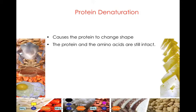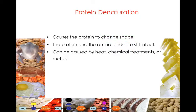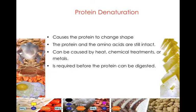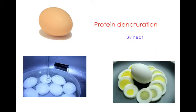Protein denaturation is a process that causes the protein itself to change shape. The proteins and amino acids are still intact. This denaturation process can be caused by heat, chemical treatment, or metals, and it is essential before proteins can be digested in our bodies. There's no way that the egg you ate for breakfast, once you swallow it, goes directly to the bloodstream — it has to be broken down into its component parts, those being the amino acids, before they can be absorbed into the bloodstream.